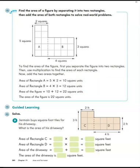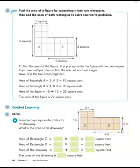Jermaine buys square foot tiles for his driveway. What is the area of his driveway? The driveway has an odd shape, so we split it into two separate rectangles: C and D. Rectangle C is three times two, which is six square feet. Rectangle D is four feet times two feet, which is eight square feet. Adding six plus eight gives us 14 square feet — so we found the area of an awkward shape just by splitting it into two nice rectangles.